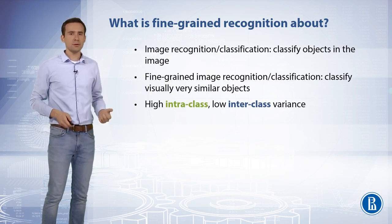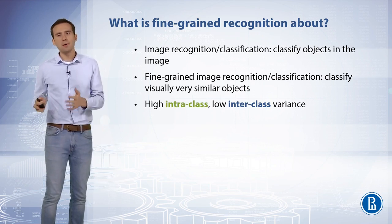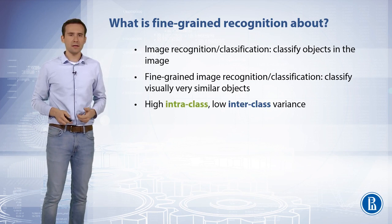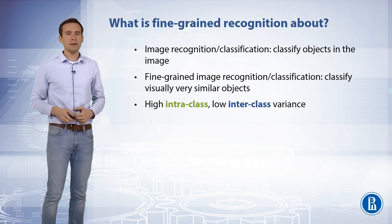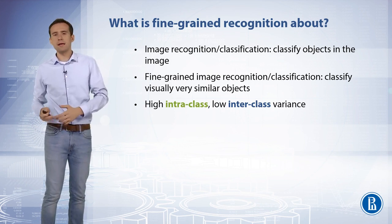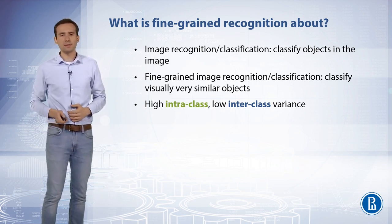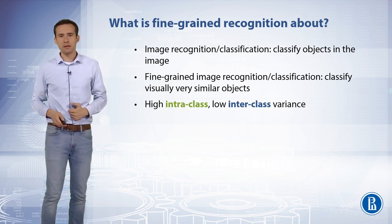In terms of visual categories, such classes have high intraclass and low interclass variance. This makes the fine-grained recognition task extremely challenging. Distinguishing between objects in this scenario often implies focusing on details from coarser to finer levels, such as the beak of a bird, because these work as discriminating features for recognition.